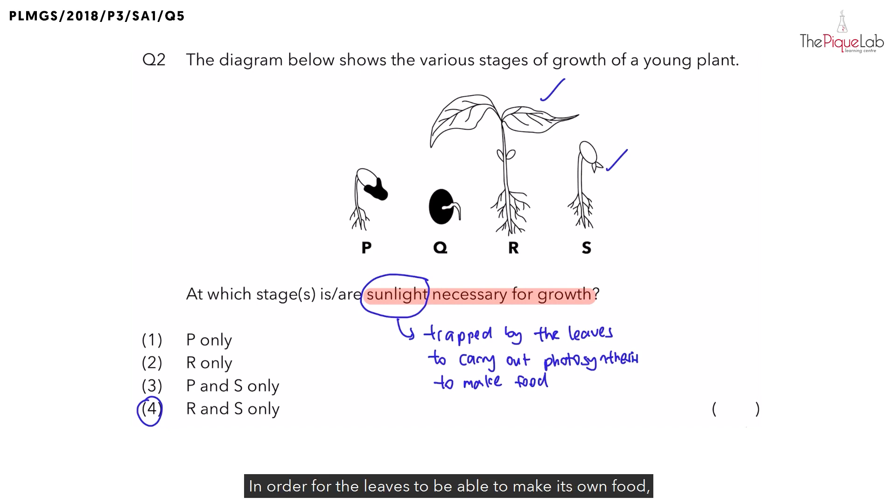In order for the leaves to be able to make its own food, the leaves need to be fully developed. Now, if you look at R and S, which is the only stage that has fully developed true leaves? It must be the leaves in stage R.